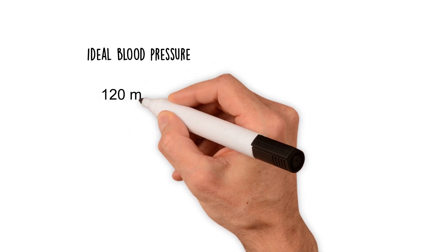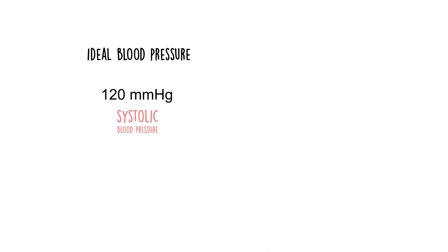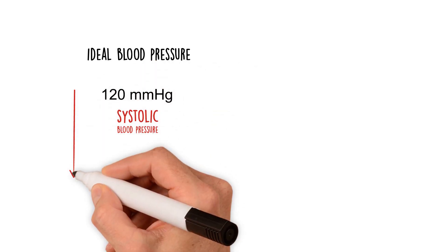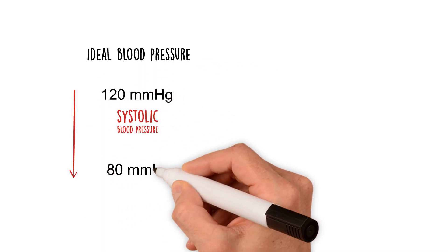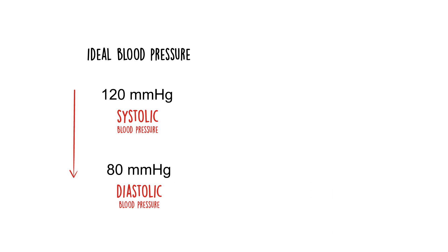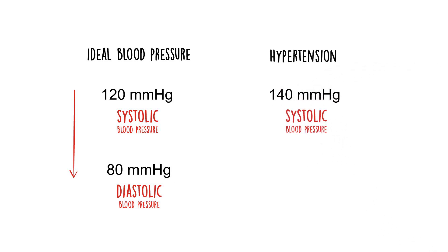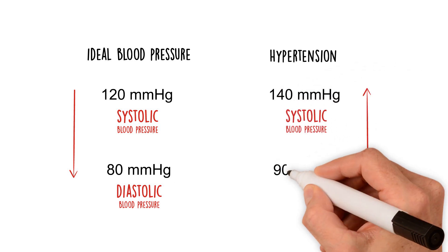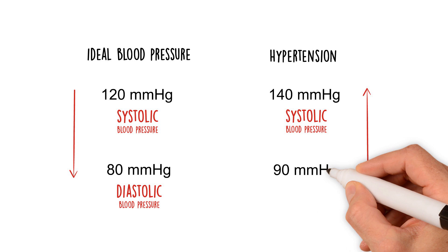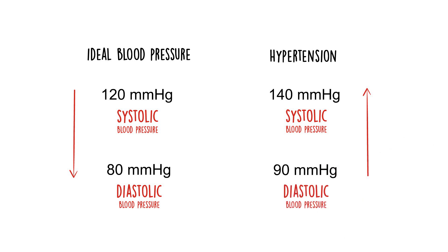An ideal blood pressure is 120 over 80 millimeters of mercury. Hypertension is defined as any blood pressure that is equal to or greater than 140 over 90 millimeters of mercury.